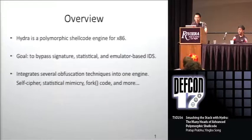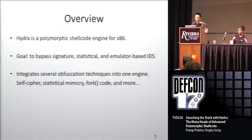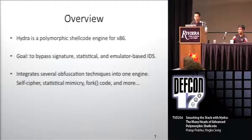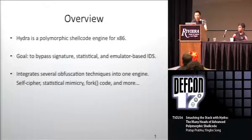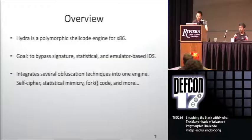Hydra is a new polymorphic shellcode engine for x86 platforms. We designed this to bypass signature, statistical, and emulator-based IDS systems. It does this by integrating several obfuscation techniques into one engine, such as self-ciphering, statistical memory, forking shellcode, and much more. I'll talk about these in today's talk.